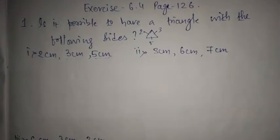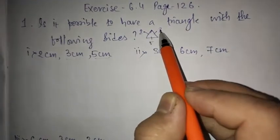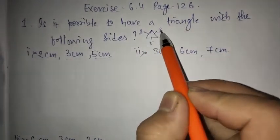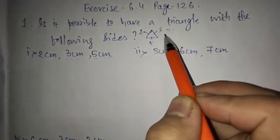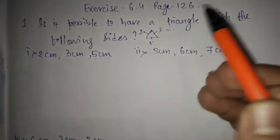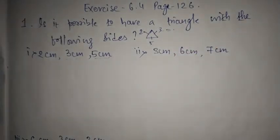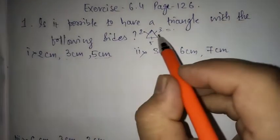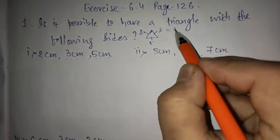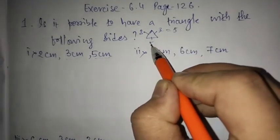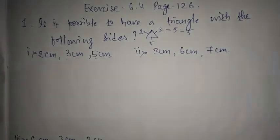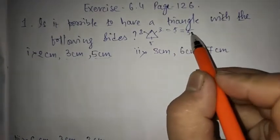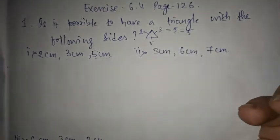The concept is: when you add two sides, if the result is greater than the other side, then the triangle can be formed. Here, 2 plus 3 is 5, and the other side is also 5. Is it greater, equal to, or less than? It is equal to. So here it is not possible to form a triangle, because this 5 is not greater than the other 5.